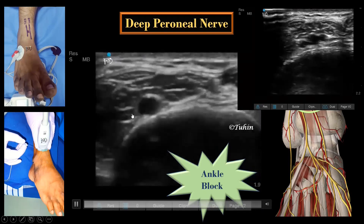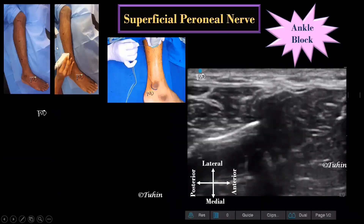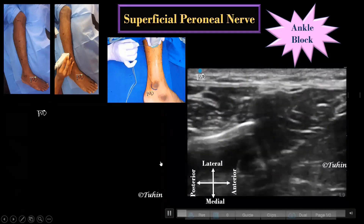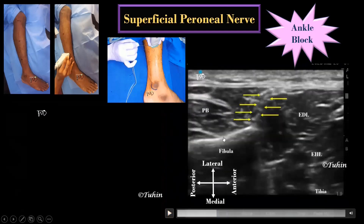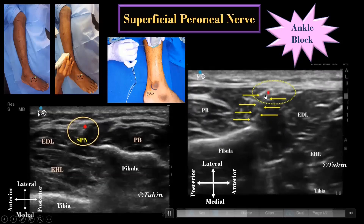For the superficial peroneal nerve block, the transducer is placed in transverse orientation about 10 to 15 centimeters proximal to the lateral malleolus — at the junction of the proximal two-thirds and distal one-third of the line joining the lateral condyle and the lateral malleolus. First identify the hyperechoic line of the fibula as the bony landmark, then another hyperechoic line connecting the fibula with the crural fascia — this is the intermuscular septum separating anterior and lateral muscular compartments.